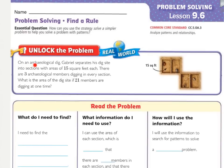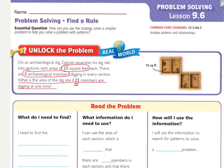Unlock the Problem. On an archaeological dig, Gabriel separates his dig site into sections with areas of 15 square feet each. There are three archaeological members digging in every section. What is the area of the dig site if 21 members are digging at one time? They drew a picture here to show that this rectangle is worth 15 feet. Underline what you're being asked to find and circle the important information. You should have underlined: what is the area of the dig site if 21 members are digging. I circled 15 square feet and three archaeological members, and I also double underlined the 21, because that is needed information to actually solve the problem.